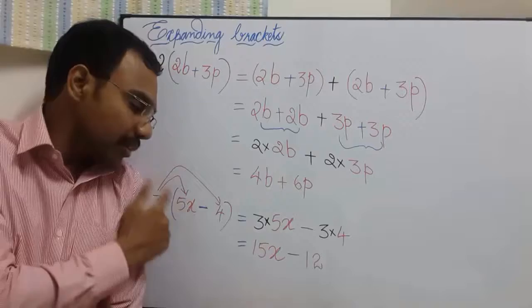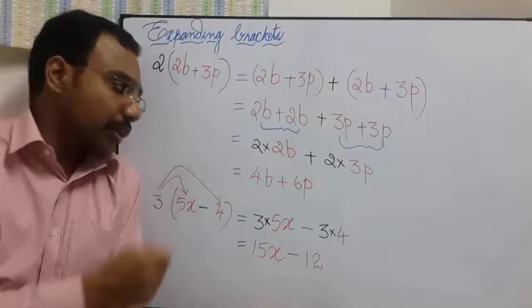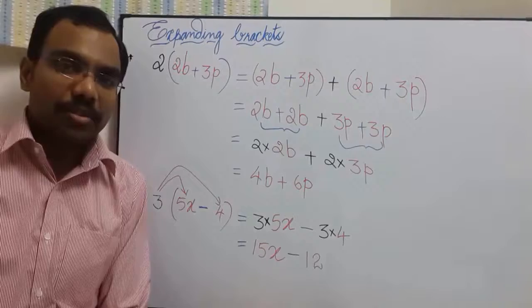Expanding bracket is nothing but distributive property. 3 has been distributed to 5X and 3 has been distributed to 4. So this is distributive property over subtraction, whereas this is distributive property over addition.